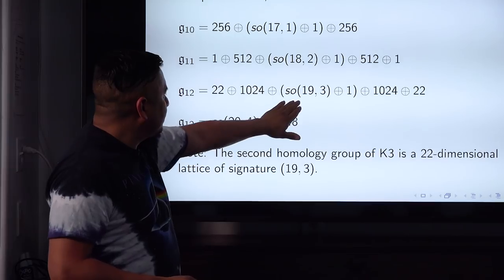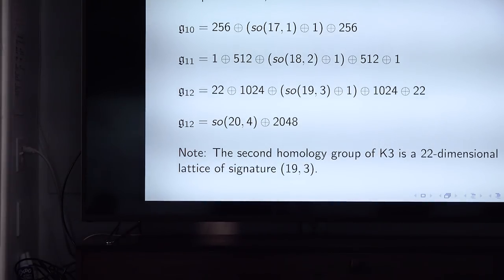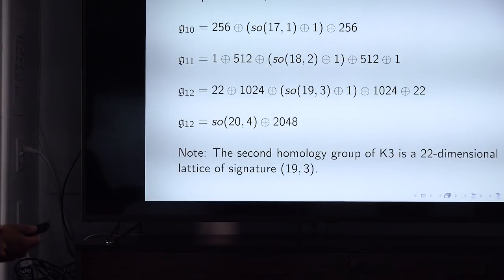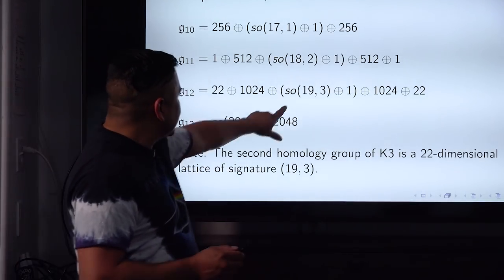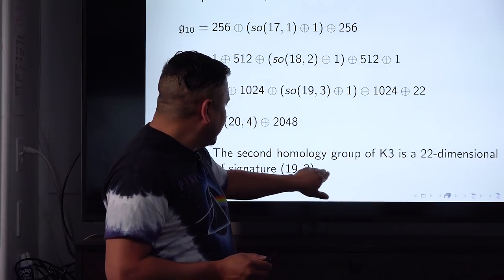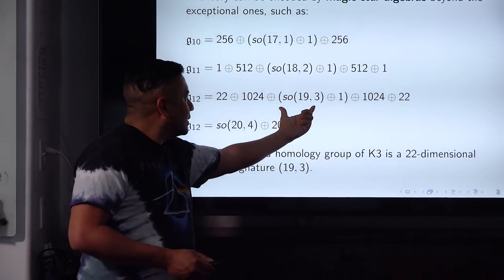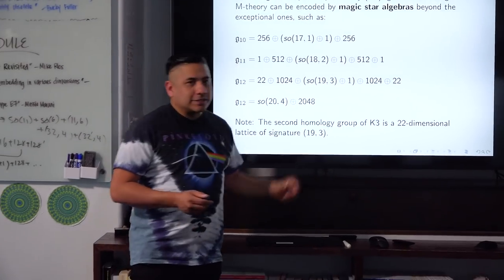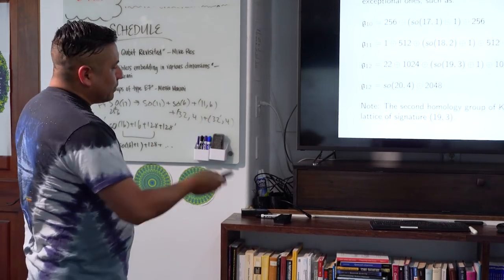These are no longer Lie algebras — you sacrifice the Lie algebra structure and the Jacobi identity — but you do have well-defined commutators, so you can have interactions. Interestingly, this signature is the same as that found in the second homology group of the K3 surface. So if we study a lattice version, there could be a direct relation to K3 surfaces. Following the yang-Mills path, you can also find a way back to these surfaces.